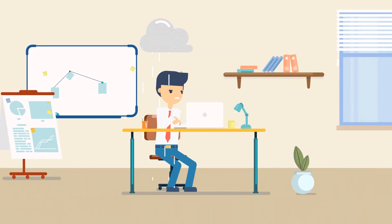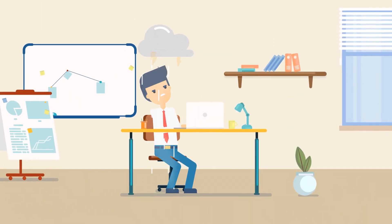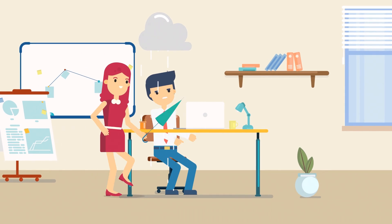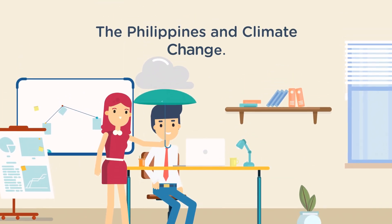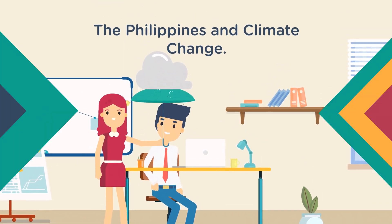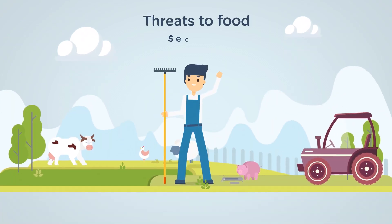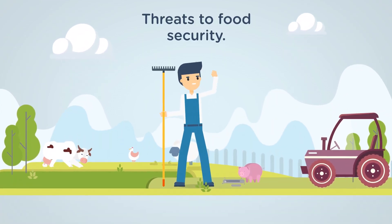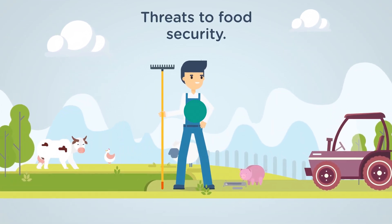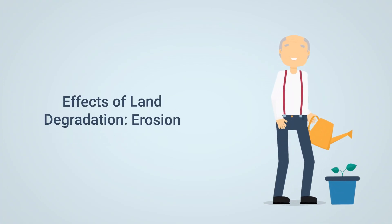Climate change. The Philippines is highly vulnerable to typhoons, droughts, and rising sea levels due to climate change. These factors can devastate crops, disrupt agricultural activities, and threaten food security. Land degradation. Soil erosion.